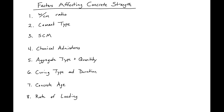The primary factor that will affect concrete compressive strength is the water-to-cement ratio. Essentially, the more water that we have, the lower the strength will be. And this is always true.